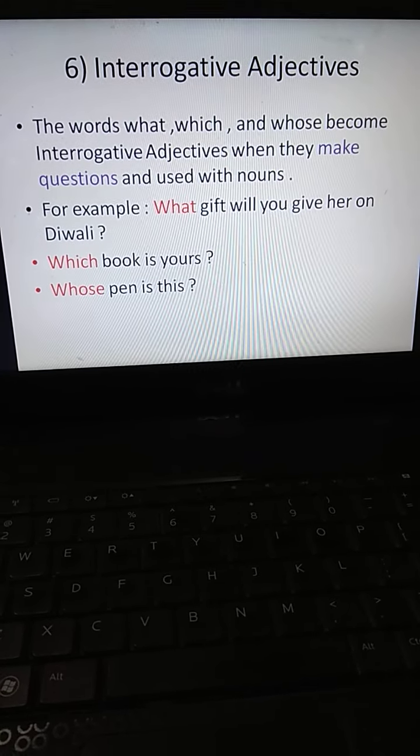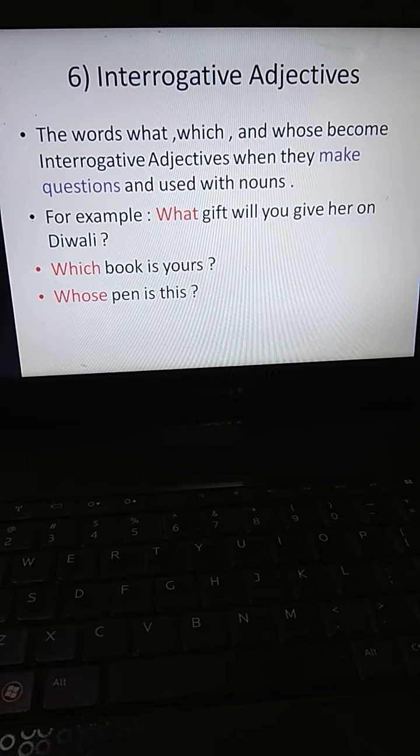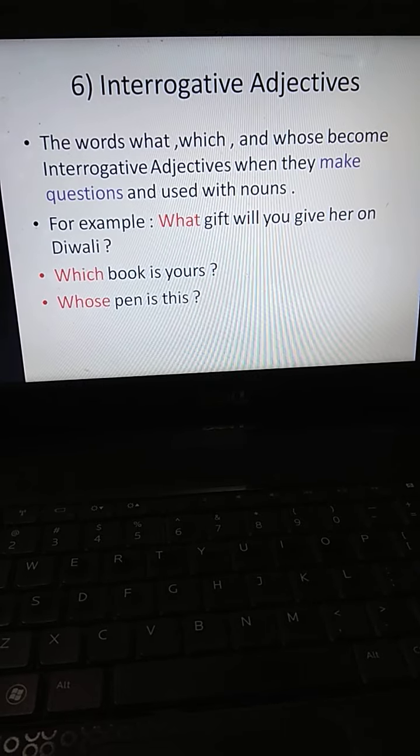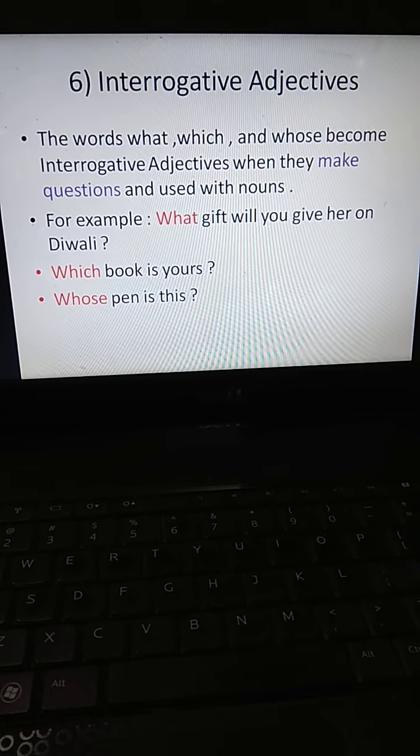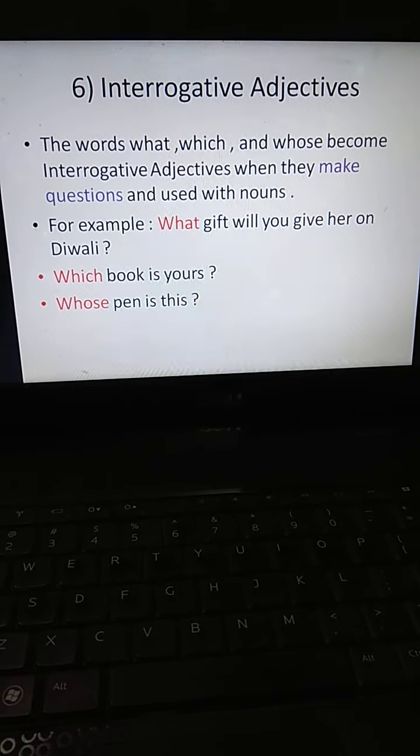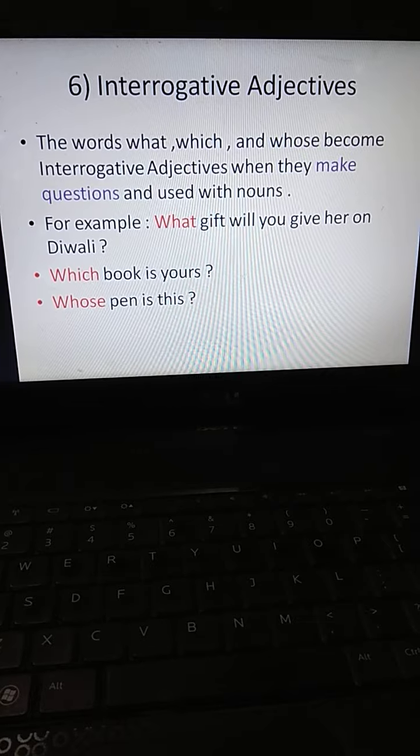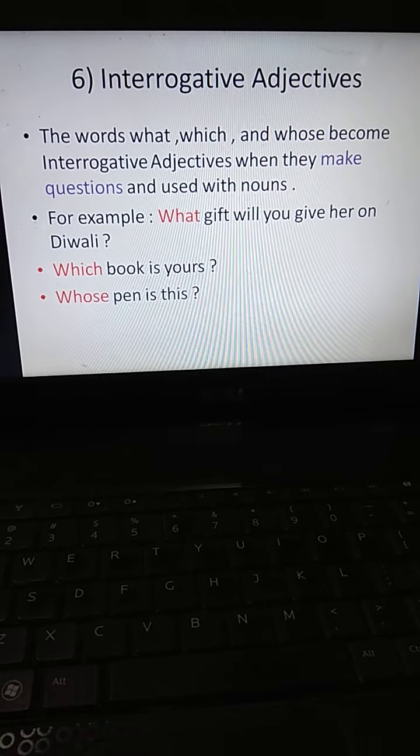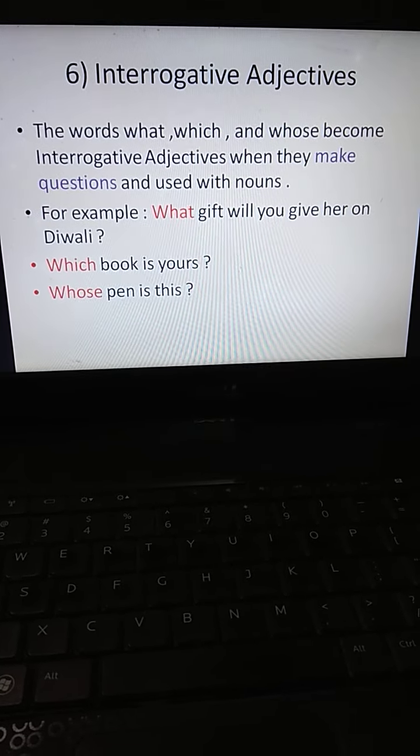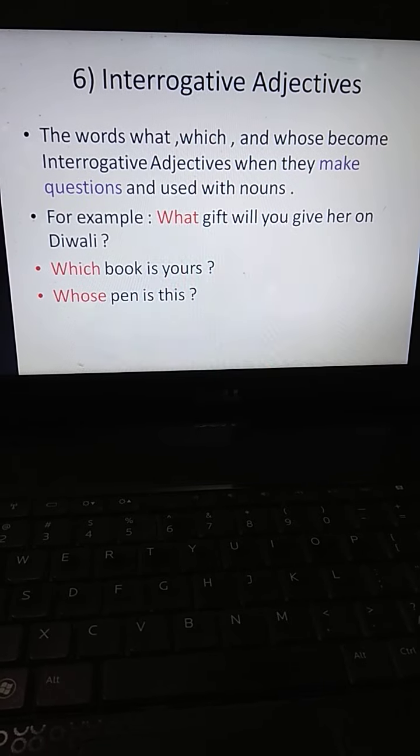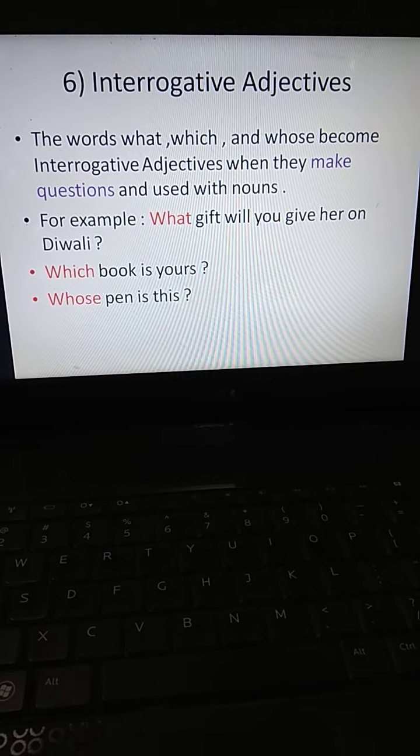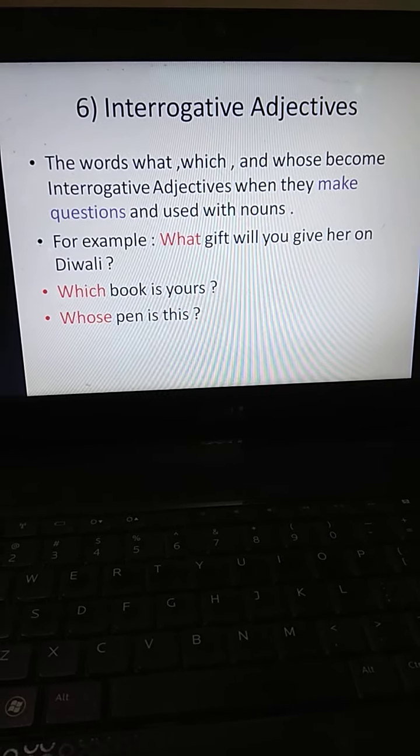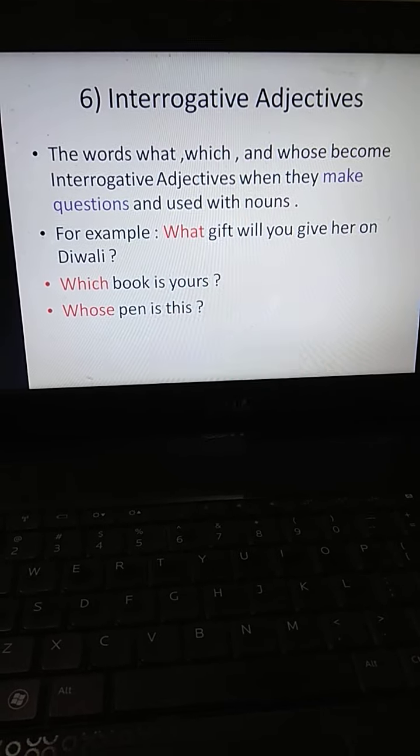Interrogative adjectives. The words what, which, and whose become interrogative adjectives when they make questions and are used with nouns. For example: What gift will you give her on Diwali? Which book is yours? Whose pen is this? The words what, which, and whose are used with nouns to ask questions and hence they are called interrogative adjectives.